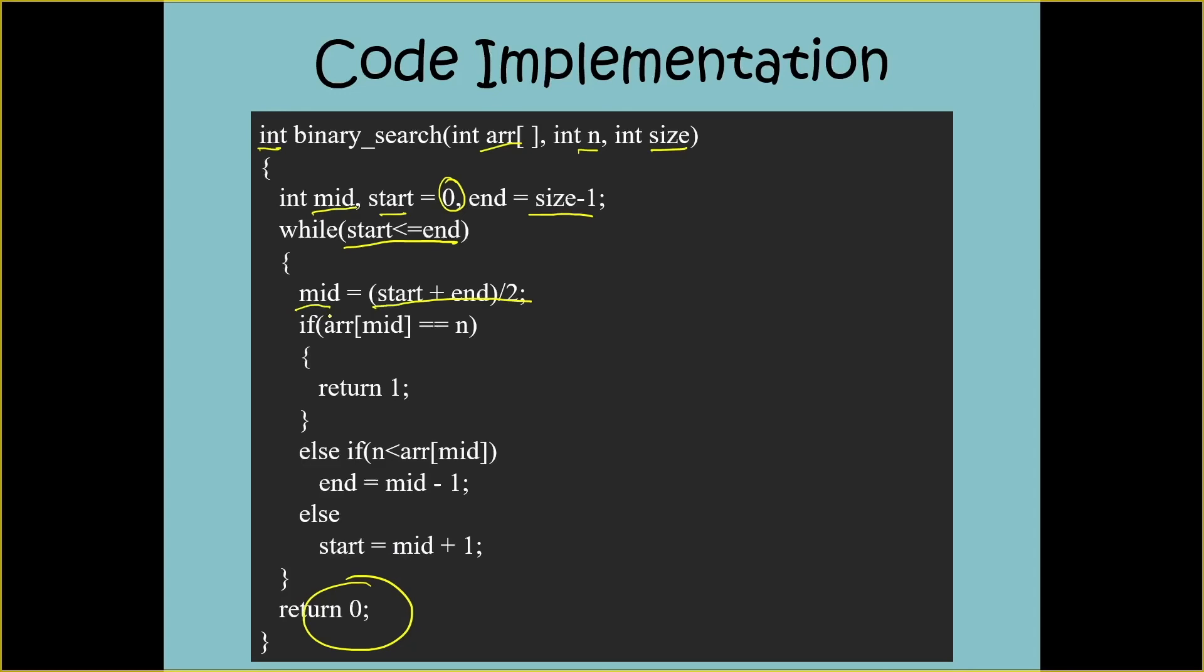Once we have found the middle position, the first condition that you see here is going to check if n exists at that middle position in the array itself. If this condition is true, then we are returning 1 from the function indicating that the element is found.